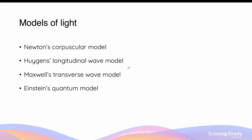Hey everybody, this video will be a summary of different models of light in HSC physics. Throughout the module on the nature of light, you would have gone through Newton's corpuscular model of light, Huygens' longitudinal wave model of light, Maxwell's transverse electromagnetic wave model of light, and finally Einstein's quantum model of light. In this video, I will be aiming to summarize each of the models and the related experiments that support or refute each of the models of light.